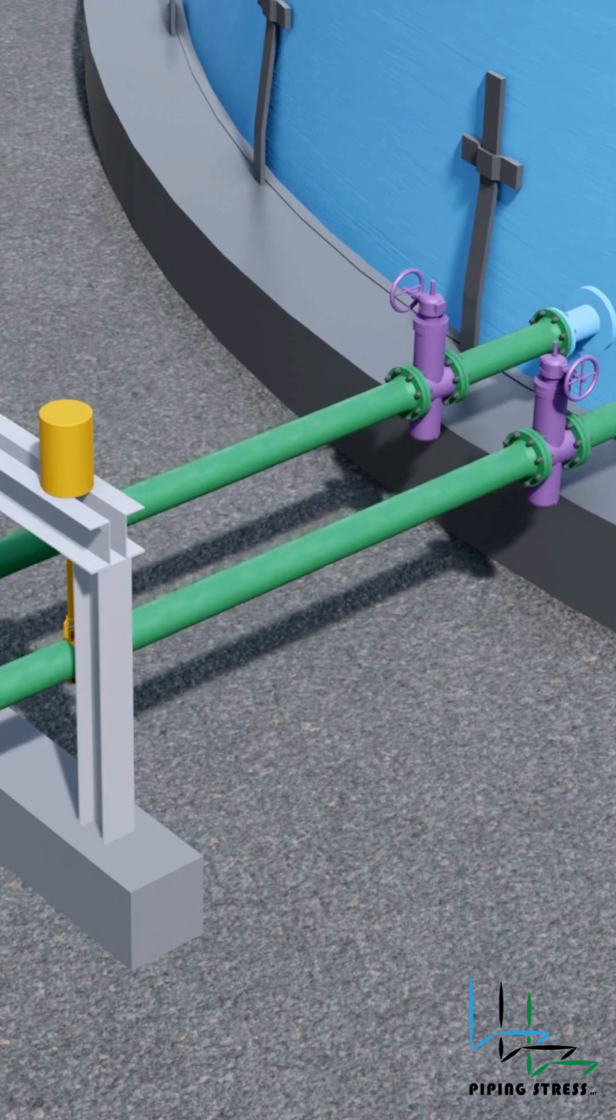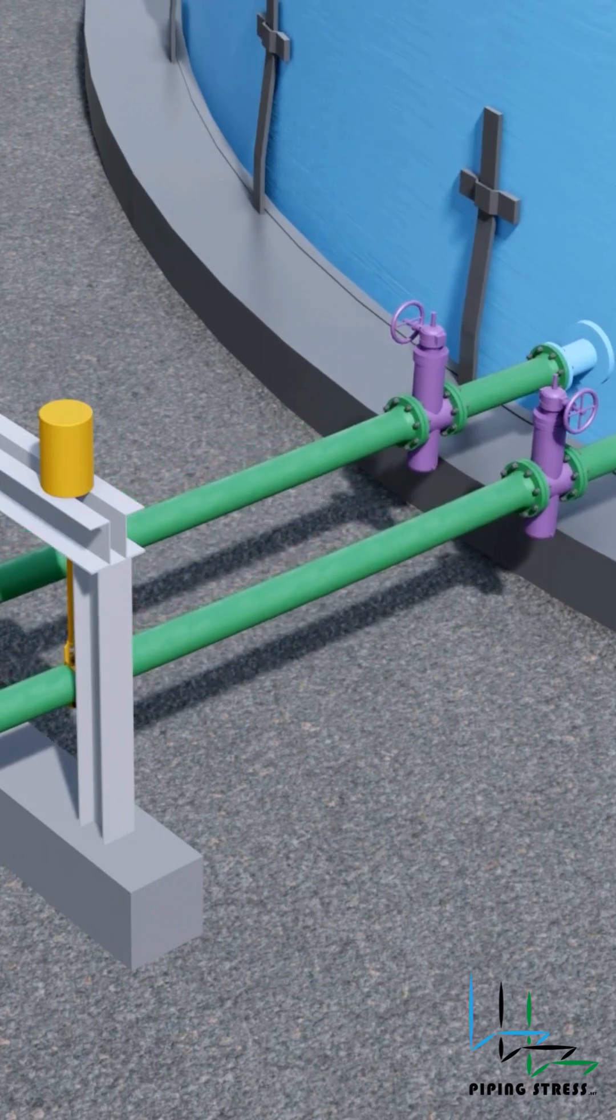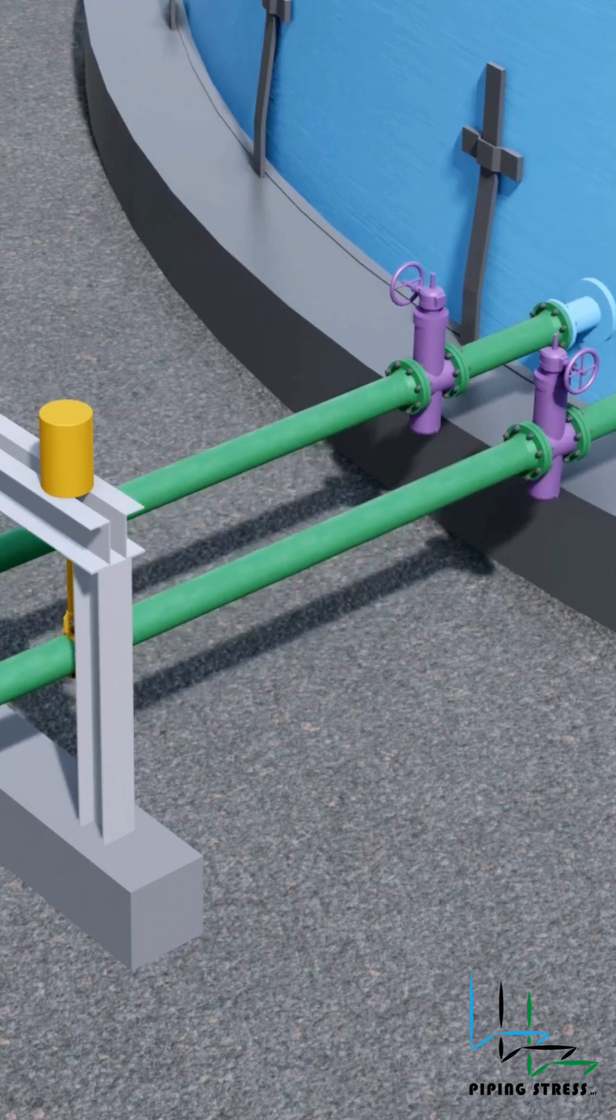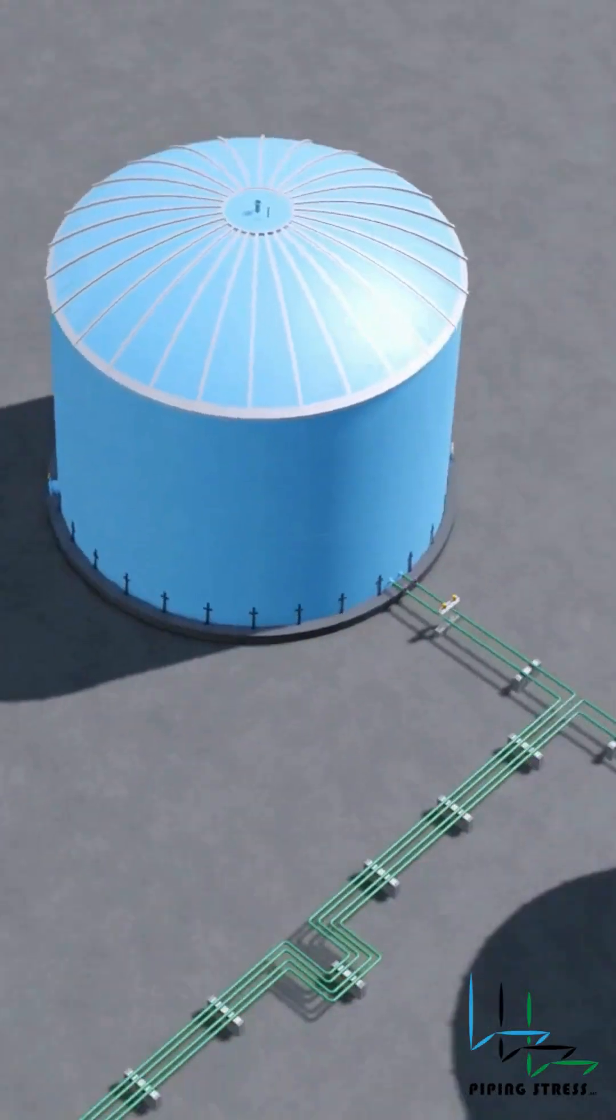For large-bore pipes, spring supports should be used. Spring support will help eliminate overstress caused by the nozzle turn and tank settlement.